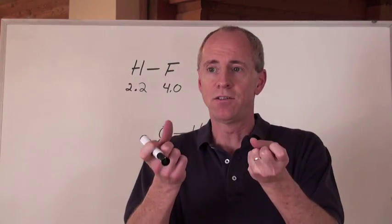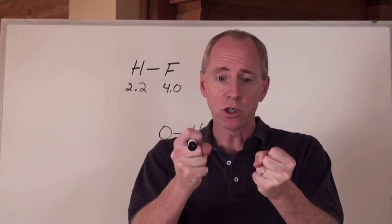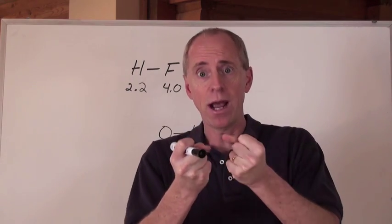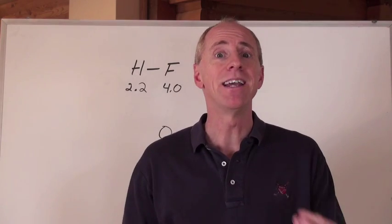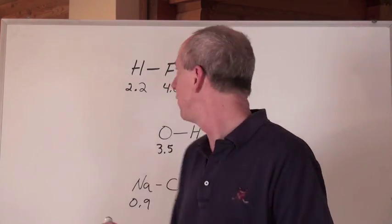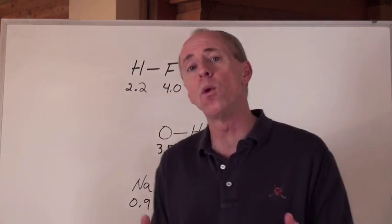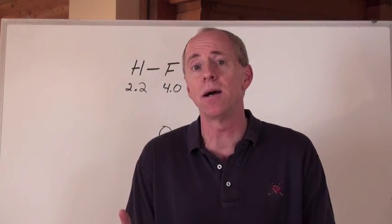Electronegativity is the degree to which electrons in a chemical bond are attracted to an element. Who's going to have the greatest attraction on the periodic table? It's fluorine. Fluorine is given an electronegativity of 4.0, which is actually a calculated number.